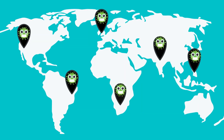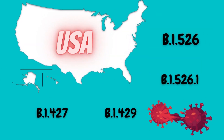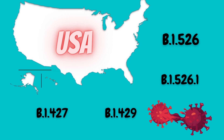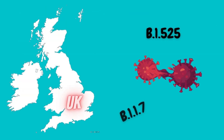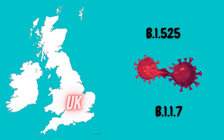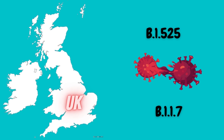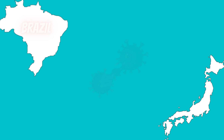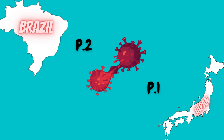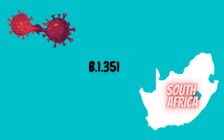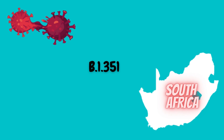Let's look at some more prominent variants identified in different parts of the world. In the United States, variants of interest include B.1.526 and B.1.526.1, while variants of concern include B.1.427 and B.1.429. In the United Kingdom, the variant of interest is B.1.525 and the variant of concern is B.1.1.7. In Brazil, the variant of interest was B.2, and the variant of concern was B.1, which was also detected in Japan around the same time. B.1.351 was the variant of concern detected in South Africa.